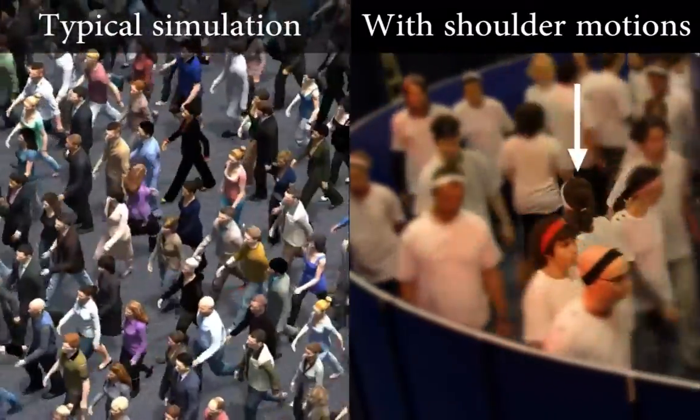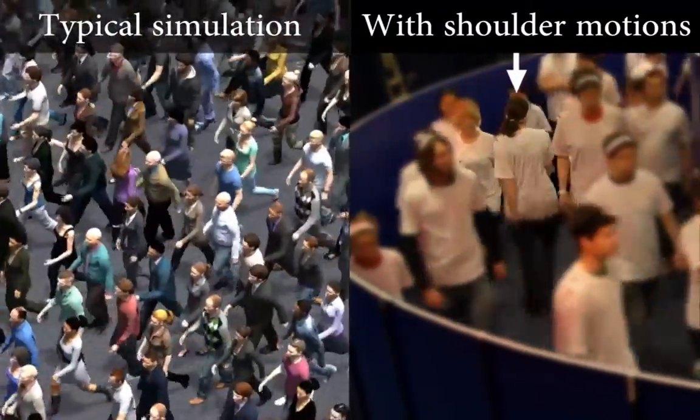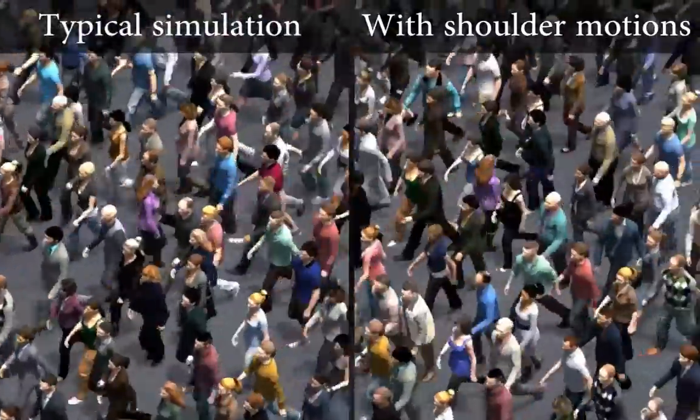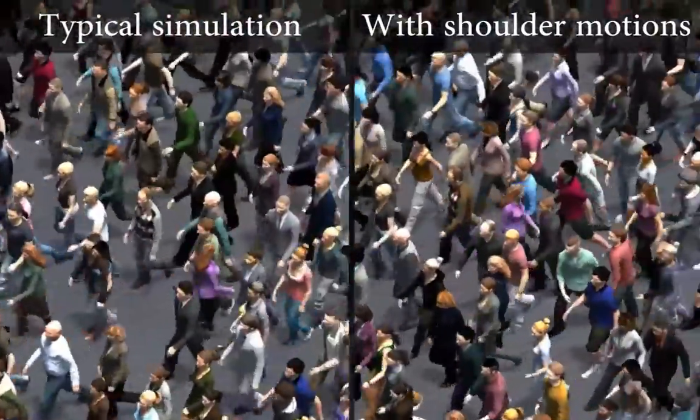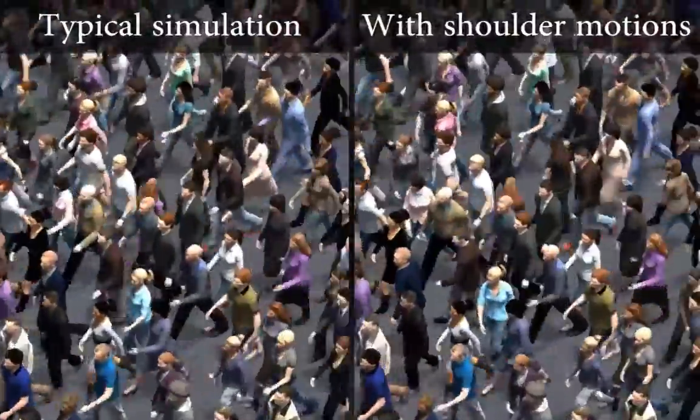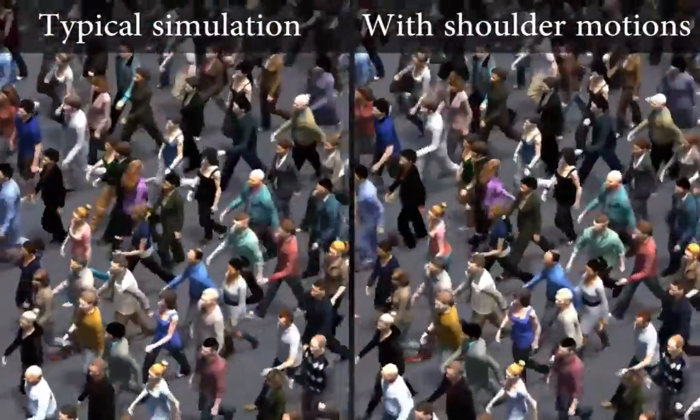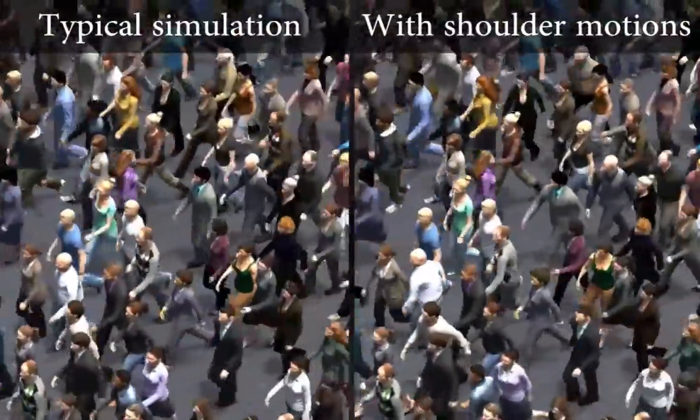The goal of this paper is to evaluate the effects of adding shoulder motions to the characters on the visual quality of the animation. This means first making residual collisions less perceptible and second improving the overall naturalness of animations.